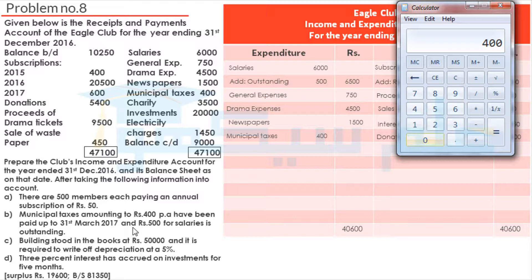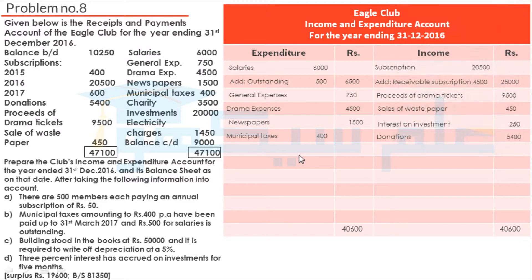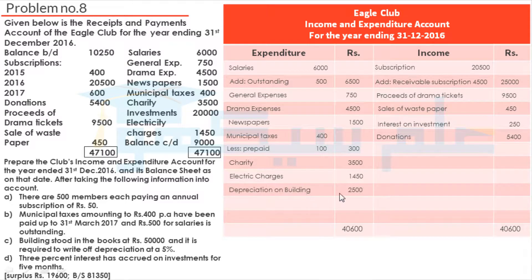Municipal taxes total payment is Rs. 400 and it has been paid up to 31st March 2017 — that is 4 months into 2017. So in 2016 that is 12 months and 4 months prepaid in 2017. We multiply 400 by 4 divided by 12, giving prepaid taxes Rs. 100, so net municipal taxes for 2016 is Rs. 300. Then charity is Rs. 3,500. Next, electricity charges Rs. 1,450.